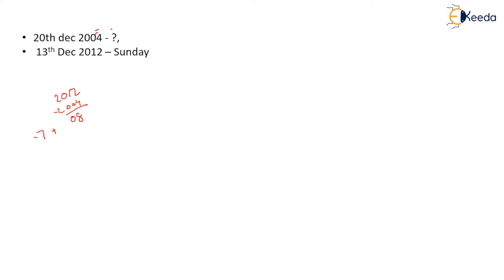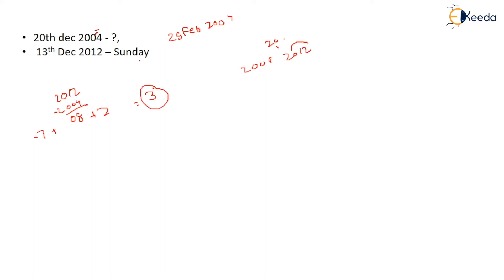Minus 7, plus the number of leap years: 2004 is a leap year but 29 February 2004 had not come, so we don't count it. We are going directly to December, so 2008 and 2012 can be counted — that's plus 2. So 10 minus 7 is 3, and you have to go 3 days backward: Saturday, Friday, Thursday. The answer is Thursday.